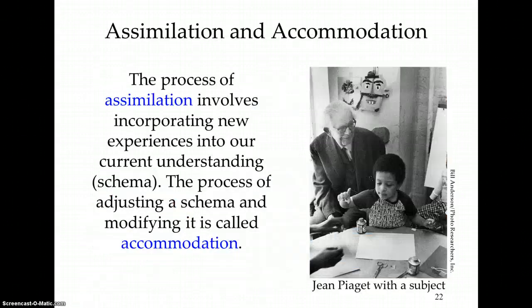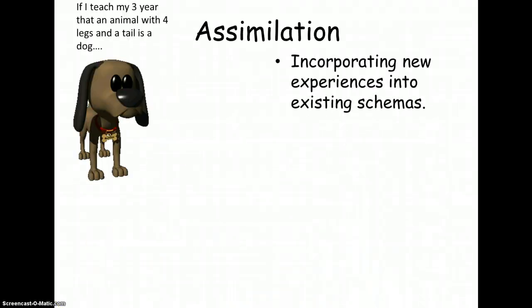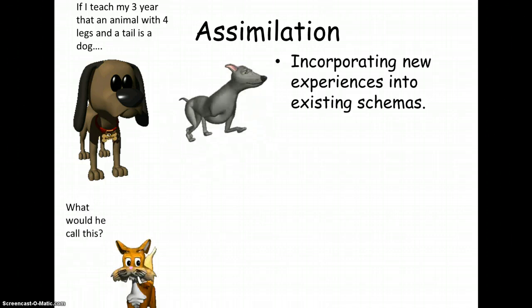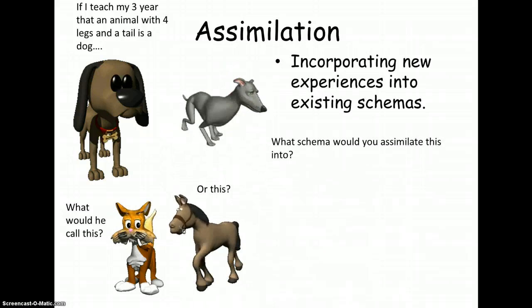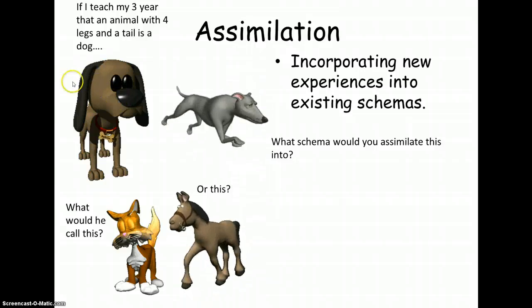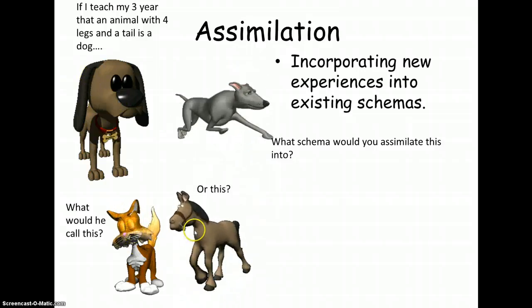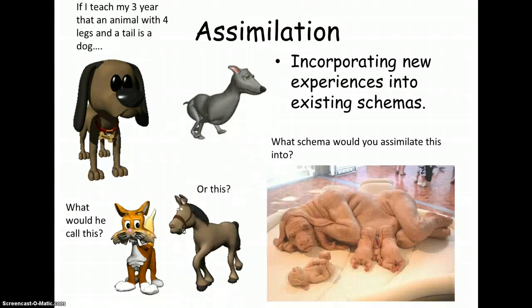Here are two really important definitions: assimilation and accommodation. Assimilation is the process of incorporating new experiences into our existing understanding. Once we adjust that schema, the process of modifying it is called accommodation. Another example: a child's schema might be 'an animal with four legs and a tail is a dog,' so that child might call a cat a dog, or even a horse a dog.